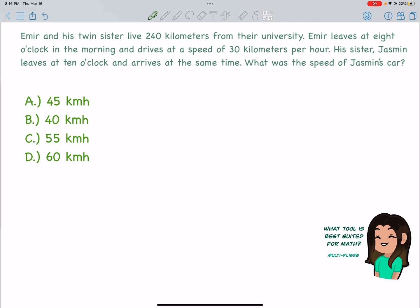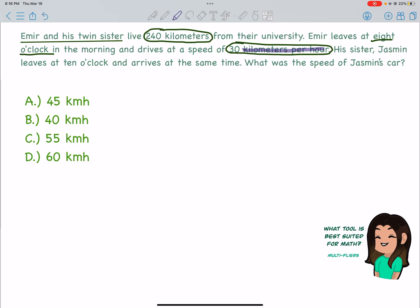We have some important information. We're talking about two people — Amir and his twin sister. They live 240 kilometers away from their university. Amir is leaving at 8 o'clock in the morning, driving at a speed of 30 kilometers per hour. I'm going to highlight 'kilometers per hour' — that's a really important term. We call that a unit rate. It tells us that Amir is driving 30 kilometers every one hour. We deal with unit rates all the time in life, typically when you're in a car — think miles per hour, how many miles you drive over the course of one hour. That's the speed of your car.